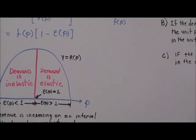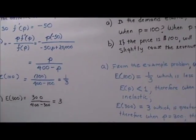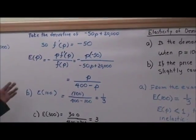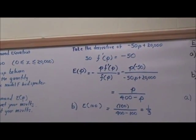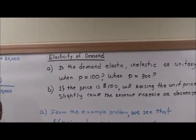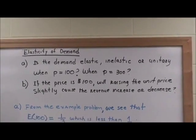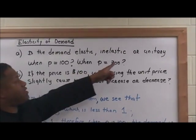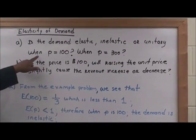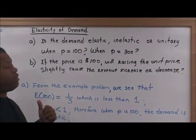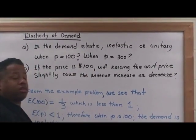Let's look at a problem. Remember from part one the Ecrasonic loudspeaker model, where we had relationships evaluated at P equals 100 and P equals 300? Is the demand elastic, inelastic, or unitary when P equals 100, and when P equals 300?